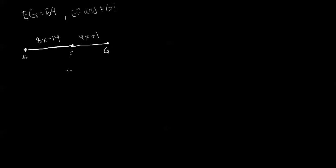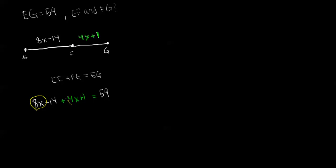Based on the Segment Addition Postulate we know that EF plus FG equals EG. So we can plug in the given values: 8X minus 14 plus 4X plus 1 equals 59. Now we want to solve for X. Let's simplify the left side: 8X and 4X combine to get 12X, and negative 14 plus 1 gives us negative 13. So 12X minus 13 equals 59. We add 13 to both sides to get 12X equals 72.